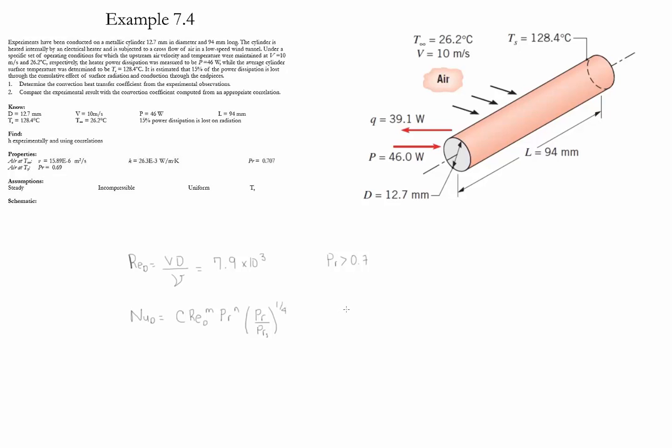Using table 7.4, which corresponds to this particular approximation, we find that the value of C is equal to 0.26, and the value of M is equal to 0.6. From the reading, we see that because the Prandtl number is less than 10, the value of N is equal to 0.37.